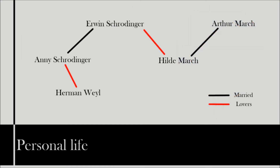When he requested to be moved, he asked for Arthur March to be his assistant, but the reasoning for this is down to Schrödinger's liking for women — he was in love with March's wife, Hilda. He had had many lovers with the knowledge of Annie, his wife, who herself had a lover in one of Schrödinger's friends, Hermann Weyl.